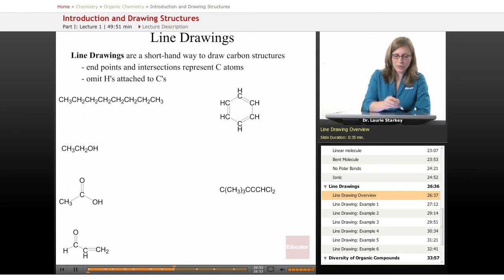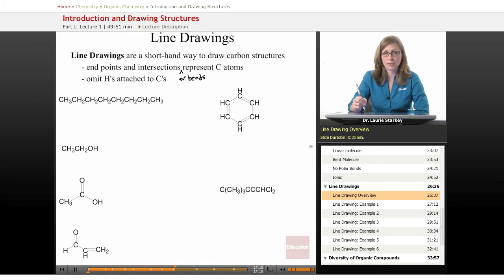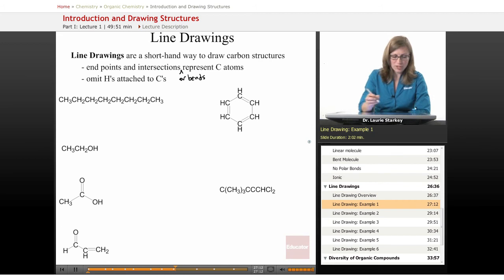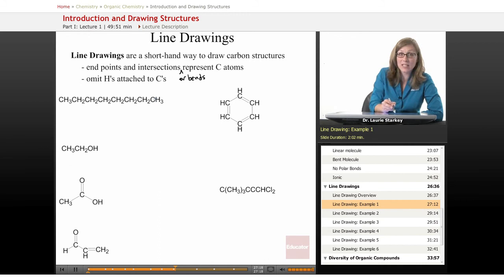Okay, and what we do is we draw lines to represent carbon chains and the definition is that any endpoint of a line represents a carbon and any intersection or bends represent a carbon atom. So for example, this carbon chain has 1, 2, 3, 4, 5, 6, 7, 8 carbons.